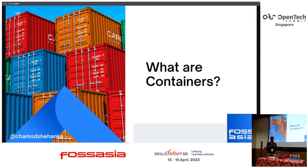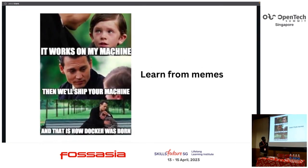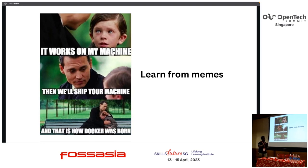What are containers? Containers are packages of software that contain all the necessary elements to run in any environment. It doesn't matter what the environment is — it can be run if it's on Docker. Previously, before container technology, people had to set up everything from scratch to run a certain application. For example, to run a Java application on production, you had to install JDK and everything, but if we containerize the application, we can run it anywhere.